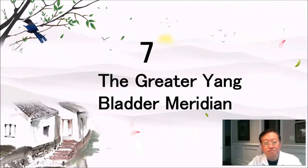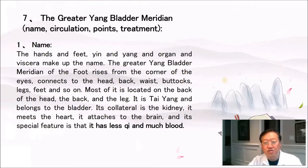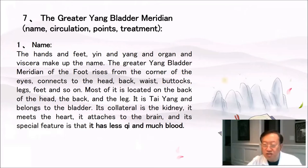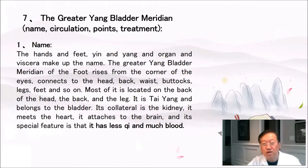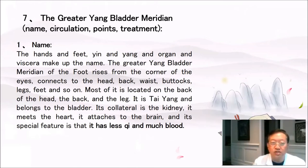Greater yang bladder meridian. The name is composed of hands and feet, yin and yang, and organ and viscera. The greater yang bladder meridian of the foot rises from the corner of the eyes and connects to the head, back, waist, buttocks, legs, and feet. Most of it is located on the back of the head and the back of the leg. It is tai yang, belongs to the bladder, and its collateral is the kidney. It meets the heart, attaches to the brain, and has less qi and much blood.